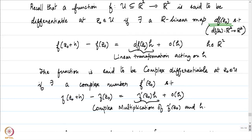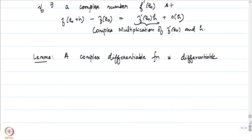The total derivative df at z₀ is a linear transformation. If you recall, the matrix of this linear transformation is given by the partial derivatives of the component functions. If f = u + iv, then the total derivative is the 2×2 matrix with rows (∂u/∂x, ∂u/∂y) and (∂v/∂x, ∂v/∂y). These are things I will assume for the sake of this course.